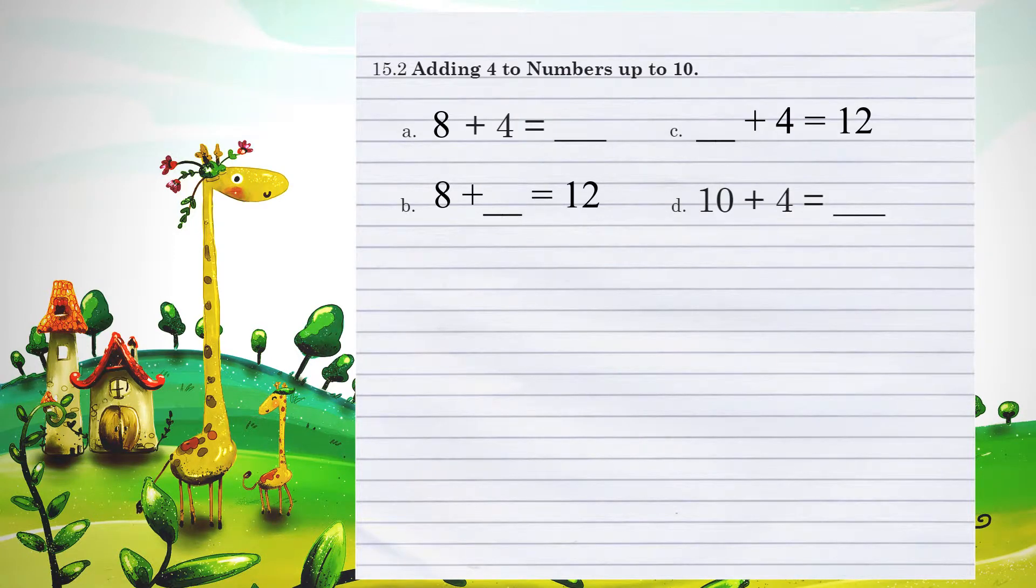Unit 15.2, adding 4 to numbers up to 10. Example A, 8 plus 4. Again, if we start with 8, and we move 4 spots over, we have 9, 10, 11, 12. So, 8 plus 4 equals 12.